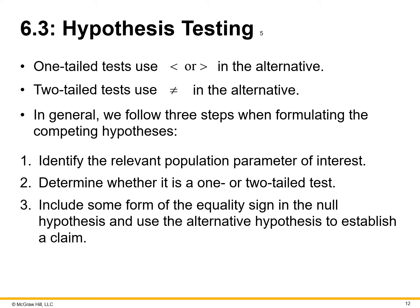You can conduct a one-tail test, which means you're looking at whether the value is on the greater-than end or the less-than end of the spectrum. A two-tail test includes 'not equal to' — you want to find out things on both sides: is it truly going to equal the value or not? There are three steps when formulating competing hypotheses: one, identify the relevant population parameter of interest; two, determine whether it is a one or two-tail test; three, include some form of equality sign in the null hypothesis and use the alternative hypothesis to establish a claim.